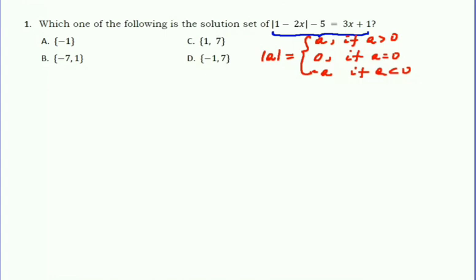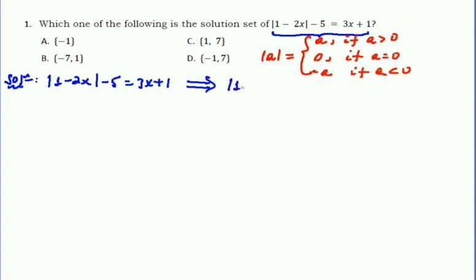Let's see the given absolute value based on this definition. We are asked for the solution set of the absolute value of 1 minus 2x minus 5, equal to 3x plus 1. Rearranging this expression, the absolute value of 1 minus 2x equals 3x plus 6, moving the 5 to the right side.